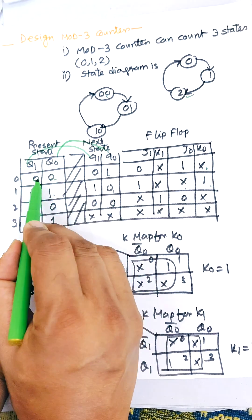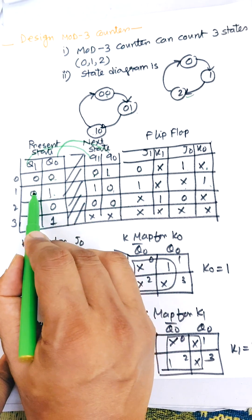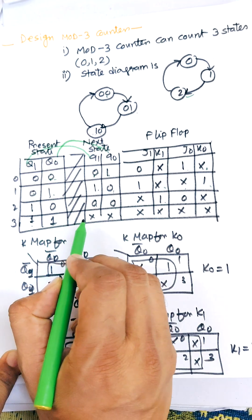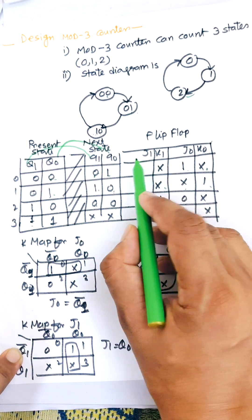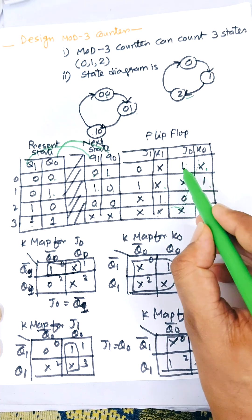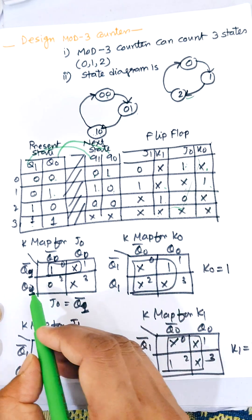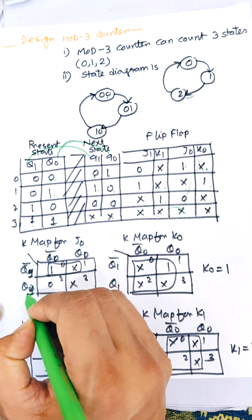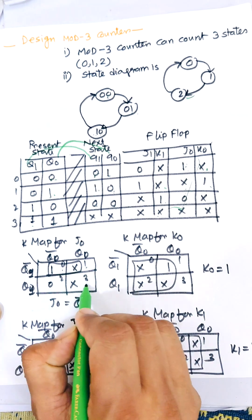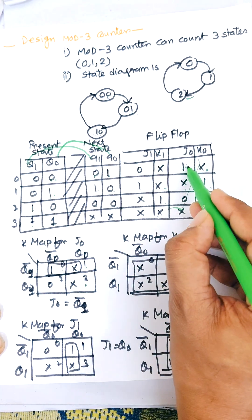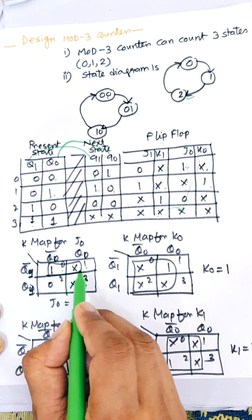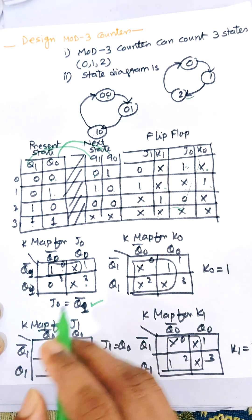For Q1 and Q1 next: 0 to 0 means J=0, K=cross; 0 to 1 means J=1, K=cross; 1 to 0 means J=cross, K=1; and 1 to 1 means cross cross. So there are 4 K-maps to solve. The first K-map is for J0, with two variables Q1-bar and Q1 on one axis, Q0-bar and Q0 on the other. Considering the 1 entry, J0 equals Q1-bar.